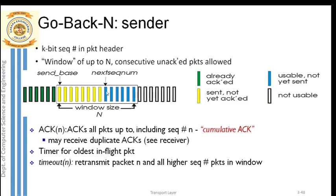The blue packets range from next sequence number to n minus 1, where n is the window size. These are packets that are inside the window but not yet sent to the receiver. As and when data arrives from the application, these packets can be sent. So from next sequence number to n minus 1 are the packets which can be sent but not yet sent.